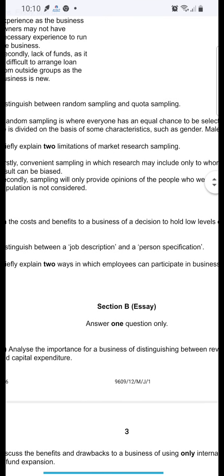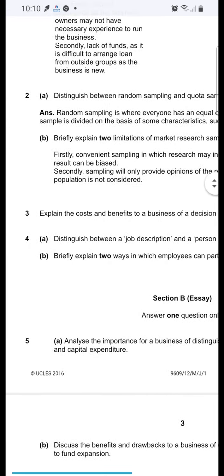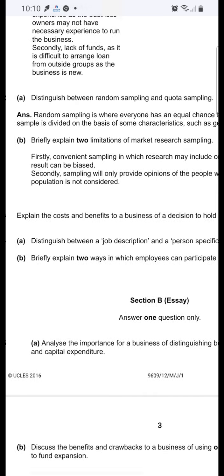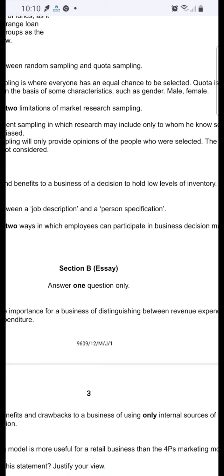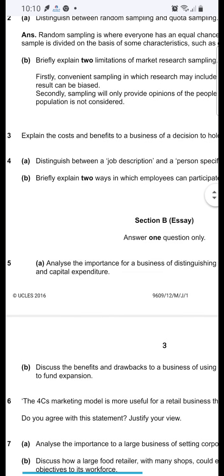Question 4: distinguish between job description and a person specification. Job description outlines the duties and responsibilities of an employer to be performed in an organization. Person specification says what characteristics should a person possess. Briefly explain two ways in which employees can participate in business decision making: employees can participate by having quality circles where they can discuss, and team working - if they work in team working, they can also do this.